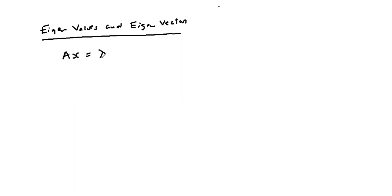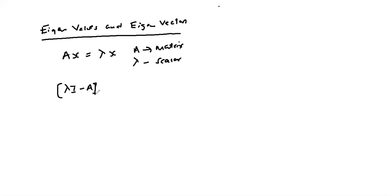If you have a matrix equation Ax = λx, where A is a matrix and λ is a scalar, the values of the scalar λ for which non-trivial solutions exist are called the eigenvalues of the matrix A. We can write the matrix equation as (λI - A)x = 0, since A is a matrix and λ is a scalar, we pre-multiply λ with an identity matrix of the same order as A.